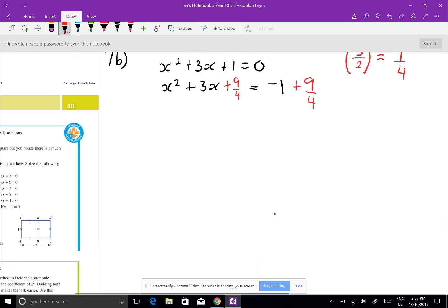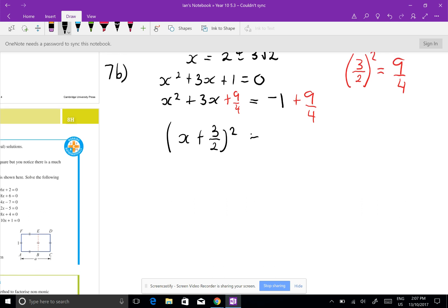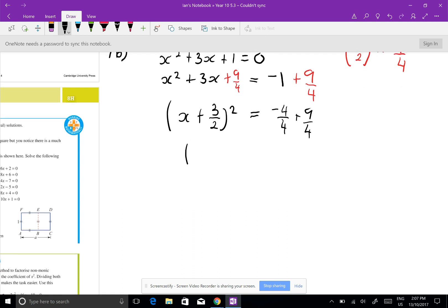So now I have x plus 3 over 2 squared. Again leave it as an improper fraction. Now here, minus 1 is the same as minus 4 on 4 plus 9 on 4. You could use your calculator to do this, but a good mathematician should be right. Plus 3 on 2 all squared equals 5 on 4.